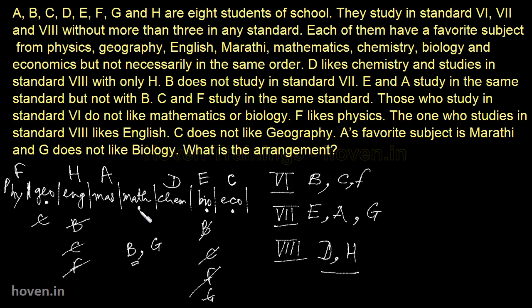Now it is the turn of fitting geography and maths. At present, B and G are left. We have to allocate these two to geography and maths. Those who study in standard 6th do not like maths or biology — B is in standard 6th and B needs to be fitted. So B won't come in maths, meaning G will come here in maths, and the remaining space — geography — will be filled by B. So this is the complete arrangement.